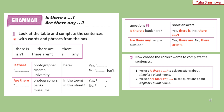Let's do exercise number one. Look at the table and complete the sentences with the words and phrases from the box. Будемо користуватись правилом: Is there a photographer here? — Чи є тут фотограф? Is there a cinema here? — Чи є тут кінотеатр? Is there a university here? — Чи є тут університет? Yes, there is. No, there isn't. Ці питальні речення утворені в однині.